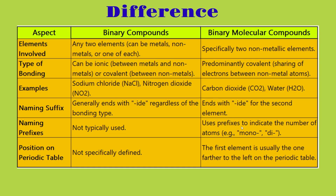What is the difference between binary compounds and binary molecular compounds? We can think of binary compounds as the tip of a mountain — it's the broadest category. It branches off into two sections: binary molecular compounds and binary ionic compounds. The elements involved in a binary compound can be any two elements — metals, non-metals, or one of each. But for binary molecular compounds, they have to specifically be two non-metallic elements.